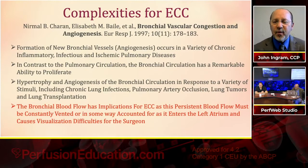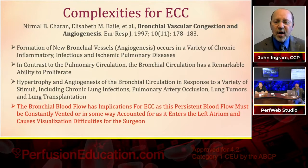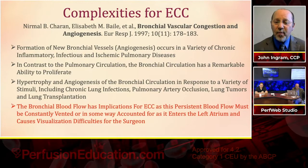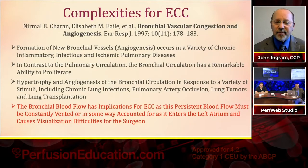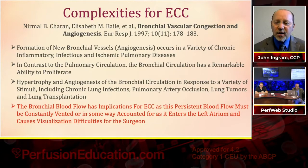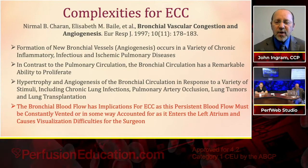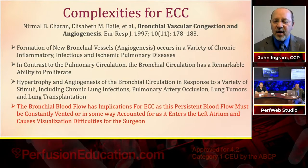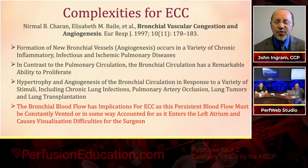A 1997 paper discusses things that can happen with bronchial vasculature. The formation of new bronchial vessels — angiogenesis — occurs in a variety of chronic inflammatory, infectious, and ischemic pulmonary diseases. In contrast to the pulmonary circulation, the bronchial circulation has a remarkable ability to proliferate, meaning some patients can have much more flow than others. The bottom line: bronchial blood flow has implications for extracorporeal circulation, as this persistent blood flow must be constantly vented or accounted for as it enters the left atrium and causes visualization difficulties for the surgeon.